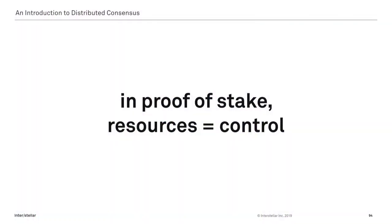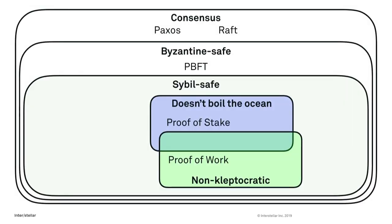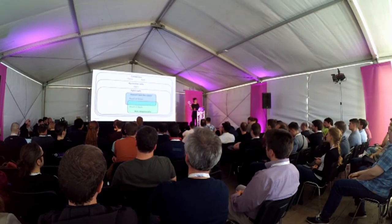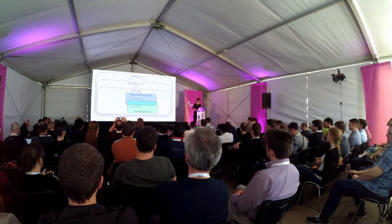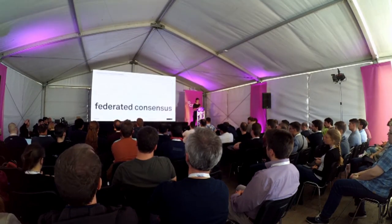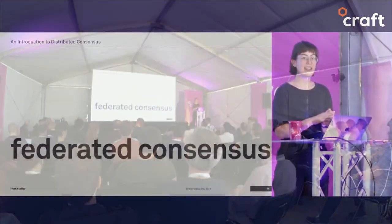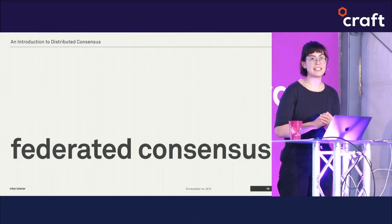But there's one last issue that all proof-of-stake systems have: they tie consensus power directly to resources. Those who have the most capital have the most control over network consensus. That might be fine for many applications, but what can you do if you want to decouple resources from consensus? Let's add another box to our universe — proof-of-stake systems are a little kleptocratic; proof-of-work systems are not. This is where federated consensus comes in, which leverages pre-existing systems of trust.